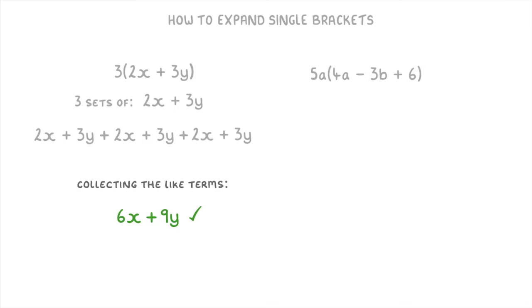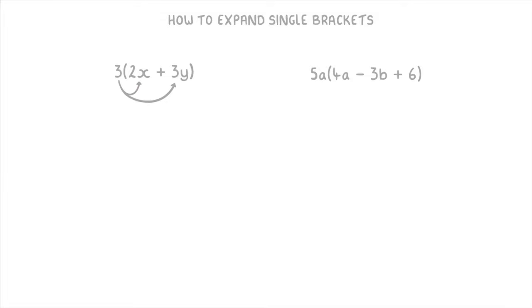This is where we multiply the term in front, so the 3, by each of the terms inside the brackets. So we'd do 3 times 2x, which is 6x, plus 3 times 3y, which is 9y. So again we get the same answer of 6x plus 9y. This technique was just a little bit quicker.